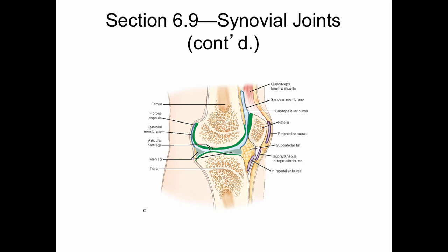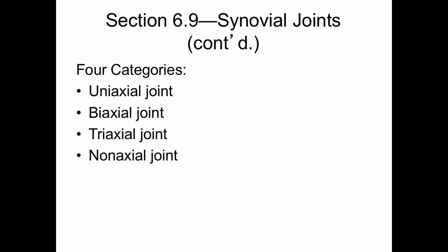Here is a sagittal cross-section of the knee joint — again, you can see the synovial cavity. There are four categories of synovial joints: uniaxial, biaxial, triaxial, and non-axial.